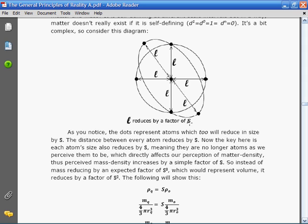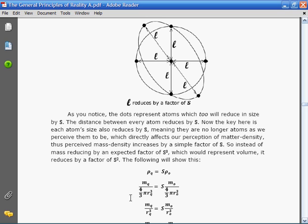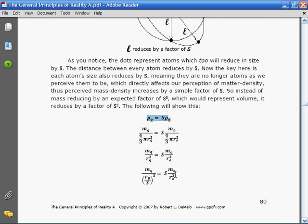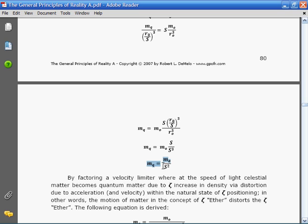Based on this equation, I was able to derive a mass equation, which was quantum mass equals celestial mass divided by S squared. As you can see, both equations use S to derive mass and density at the quantum scale.